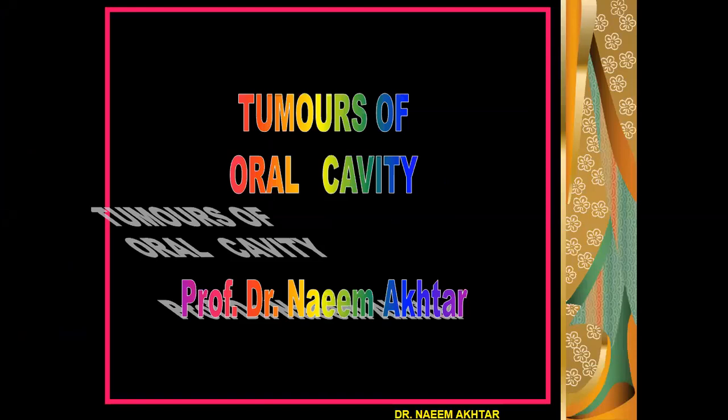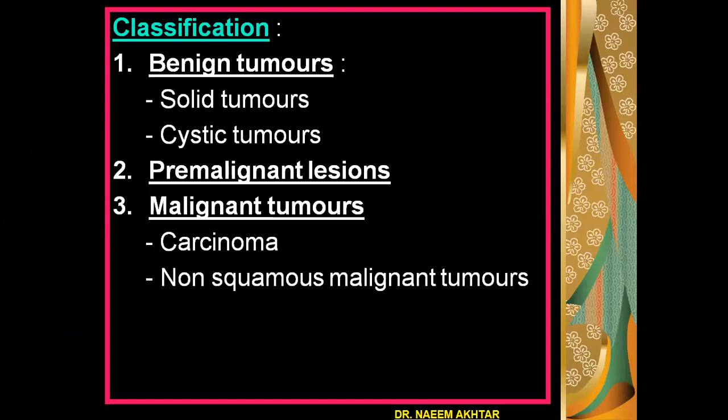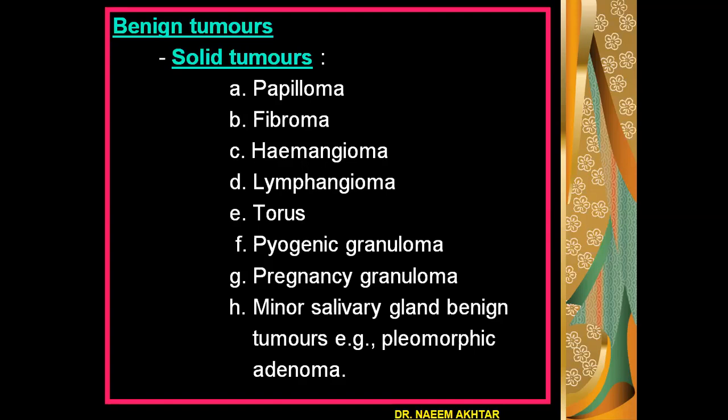We are going to start tumors of the oral cavity. The tumors which occur in the oral cavity may be classified into three main groups: benign tumors, pre-malignant lesions, and malignant tumors. The benign tumors are further subdivided into solid tumors and cystic tumors, whereas the malignant tumors can be classified into two: carcinoma and non-squamous malignant tumors.